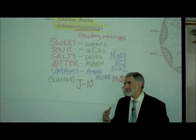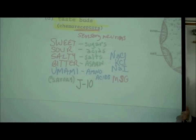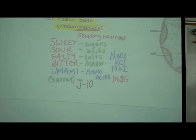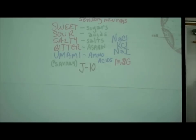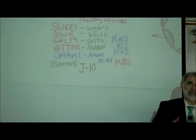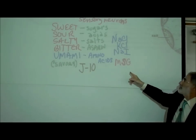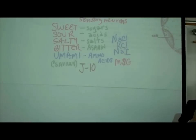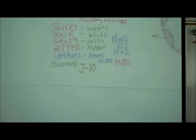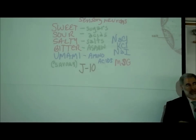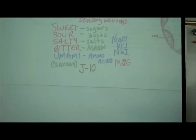What tastes bitter are certain complex organic molecules — for example, aspirin tastes really bitter. About 12–15 years ago, Japanese researchers discovered a fifth taste called umami. These are chemoreceptors activated by amino acids. An example is MSG, monosodium glutamate, derived from glutamic acid. The word umami is Japanese, usually translated as savory, meaty, or brothy.